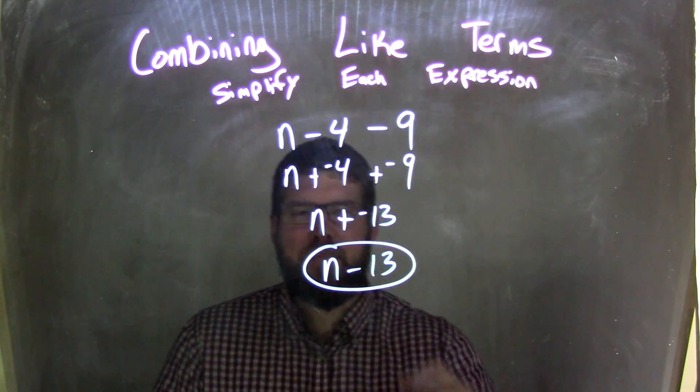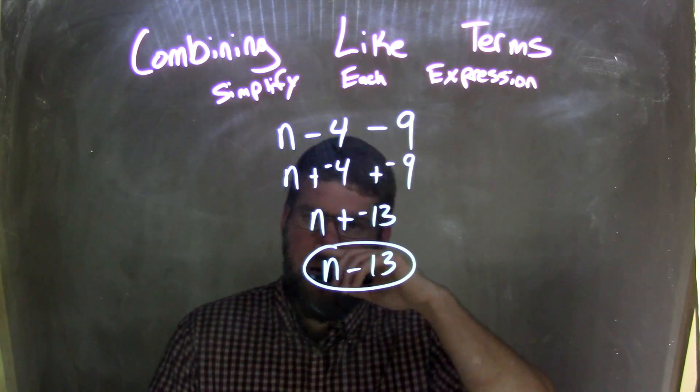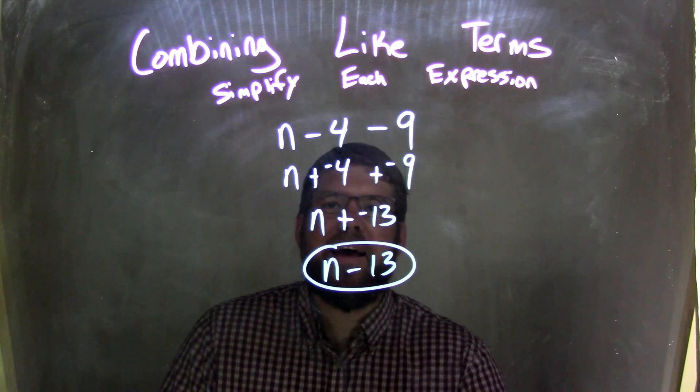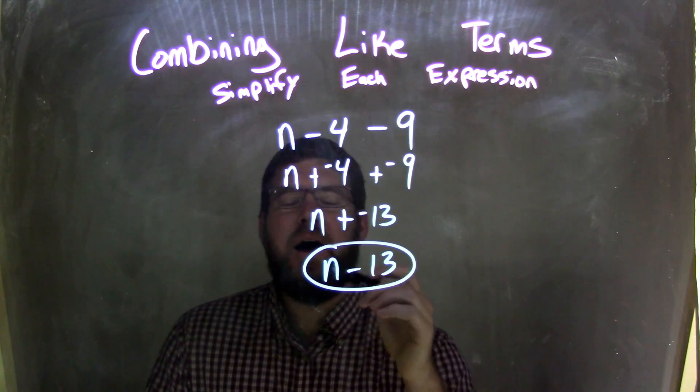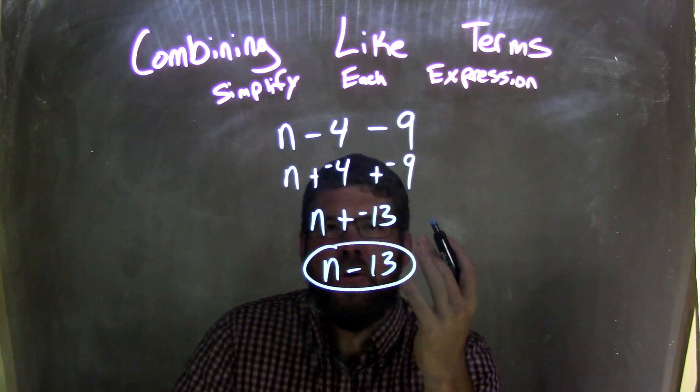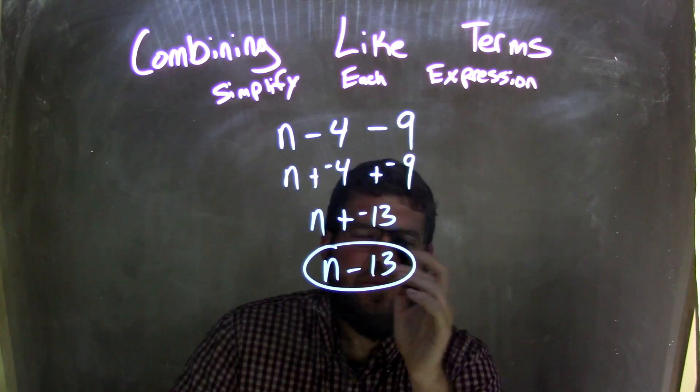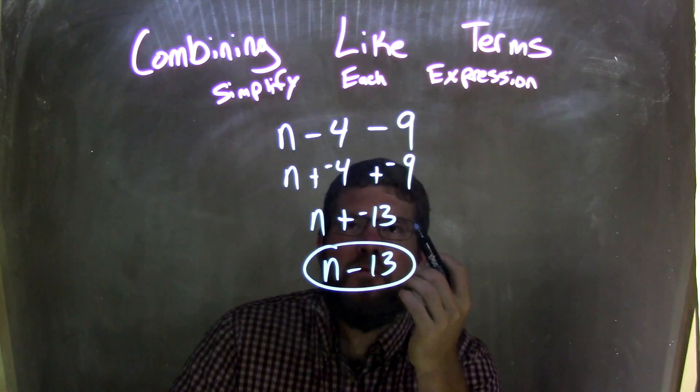So let's recap. We have n minus 4 minus 9. I convert my subtraction to be adding a negative 4 and adding a negative 9 instead of subtraction, right? It helps see that order, or see that combination of which numbers and how we add them first.